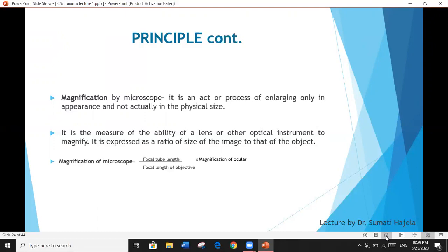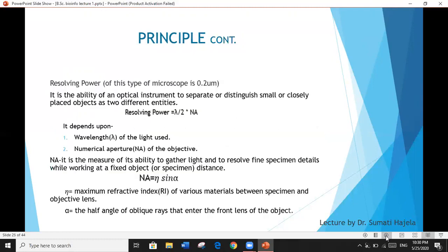It is a measure of ability of a lens or other optical instruments to magnify, and it is expressed as the ratio of size of the image to that of the object. If we try to calculate magnification by the microscope, we will be using the following formula which is focal tube length divided by focal length of the objective lens multiplied by magnification of ocular. I will be discussing various parts of the microscope later. And right now we are discussing this principle.